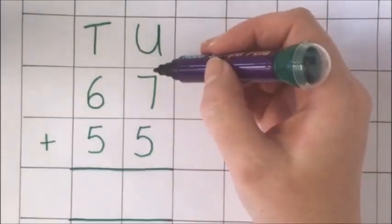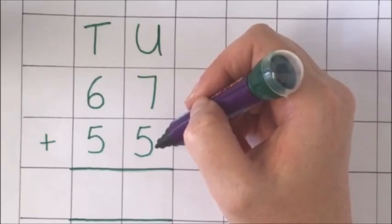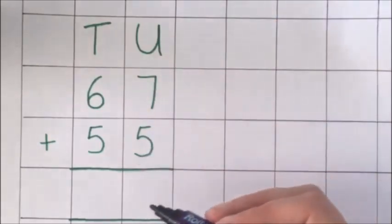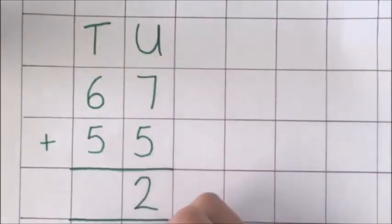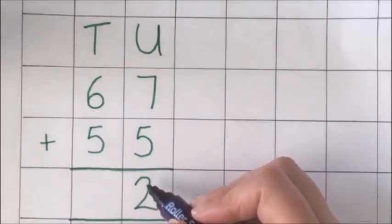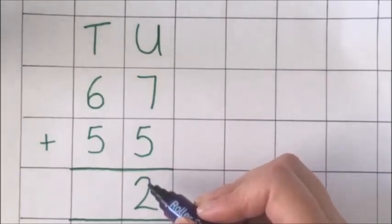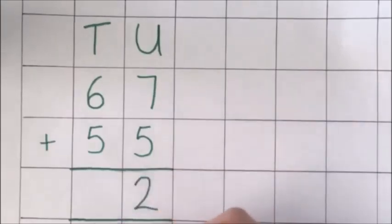Add the units first. 7 units and 5 units is 12 units. So the 2 of the 12 goes in the units column and the 10 goes just beneath the answer column large so that I don't forget about it.